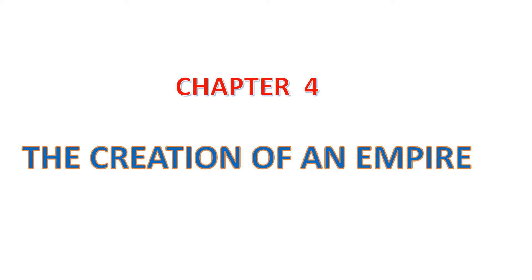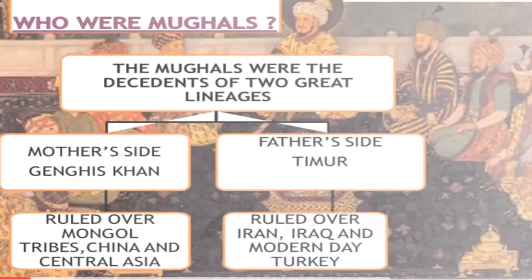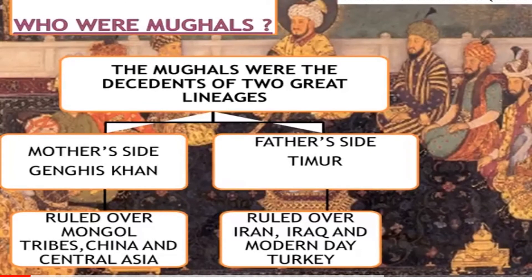First we will learn about who were the Mughals. The Mughals were the descendants of two great lineages. From their mother's side they were the descendants of Genghis Khan, who ruled over Mongol tribes, China, and Central Asia.